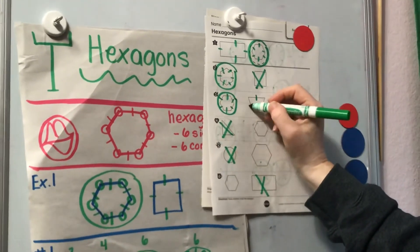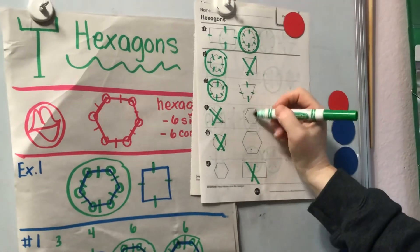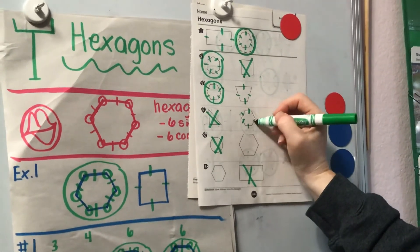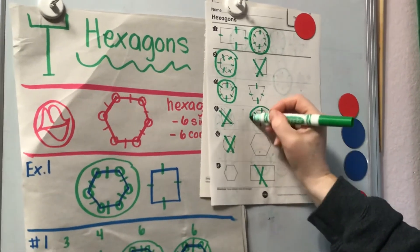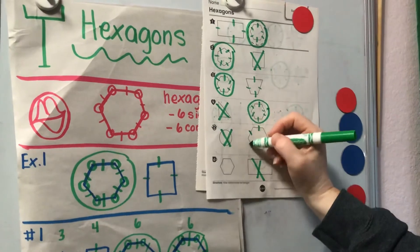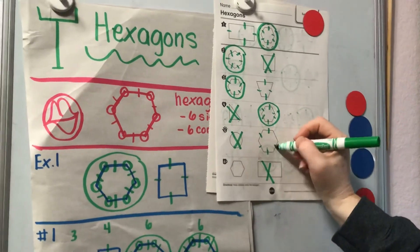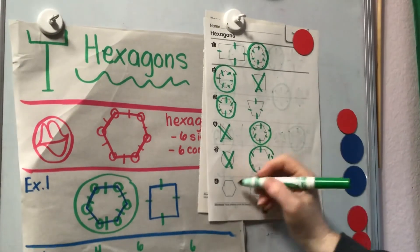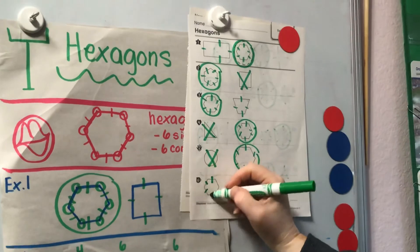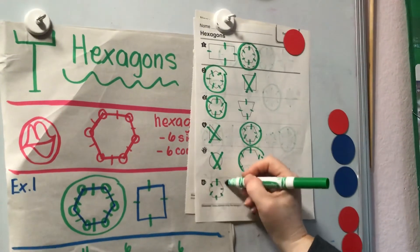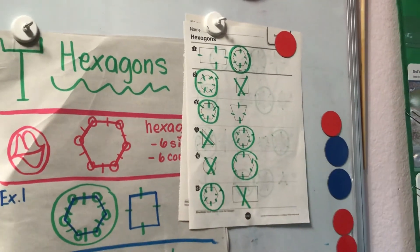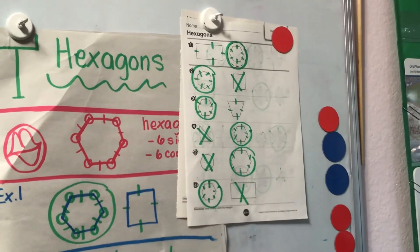One, two, three, four — nope. One, two, three, four, five, six — hexagon. One, two, three, four, five, six — hexagon. One, two, three, four, five, six — hexagon. Now you're an expert!